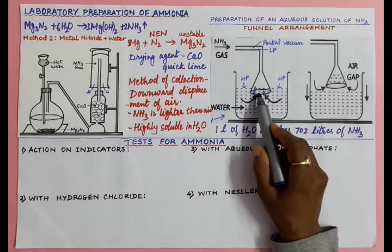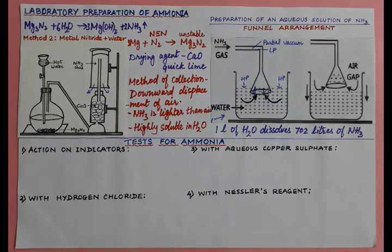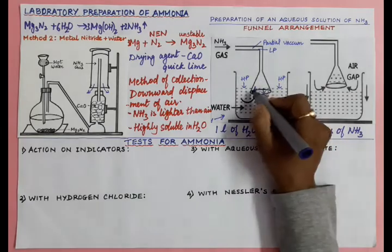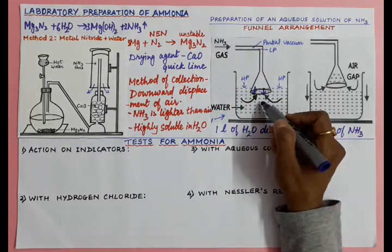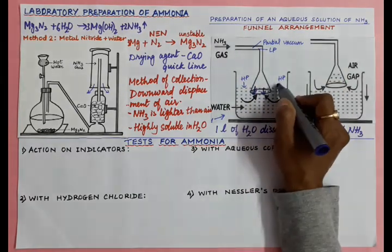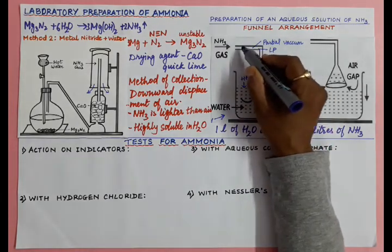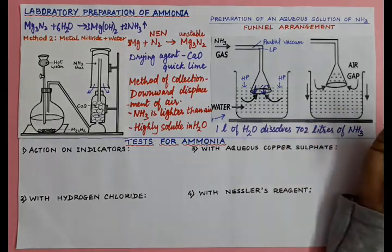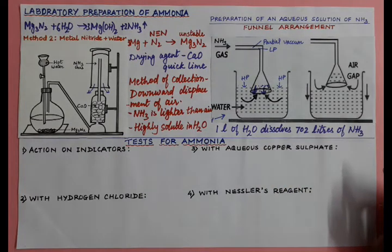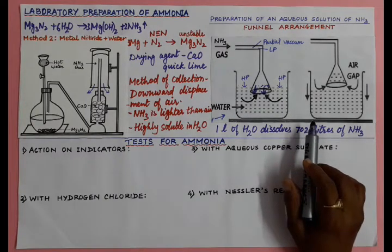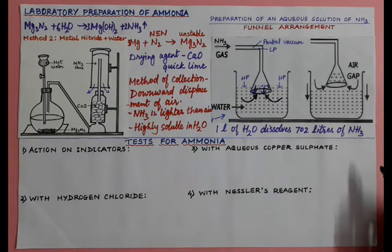The funnel arrangement solves this problem because the mouth of the funnel is wide. When ammonia dissolves in water, a partial vacuum develops and water rises into the funnel, but air enters through the gap, equalizing pressure, causing water to fall back. This cycle repeats, allowing ammonia to dissolve safely. The two advantages of the funnel arrangement are: it prevents back suction and provides a larger surface area.